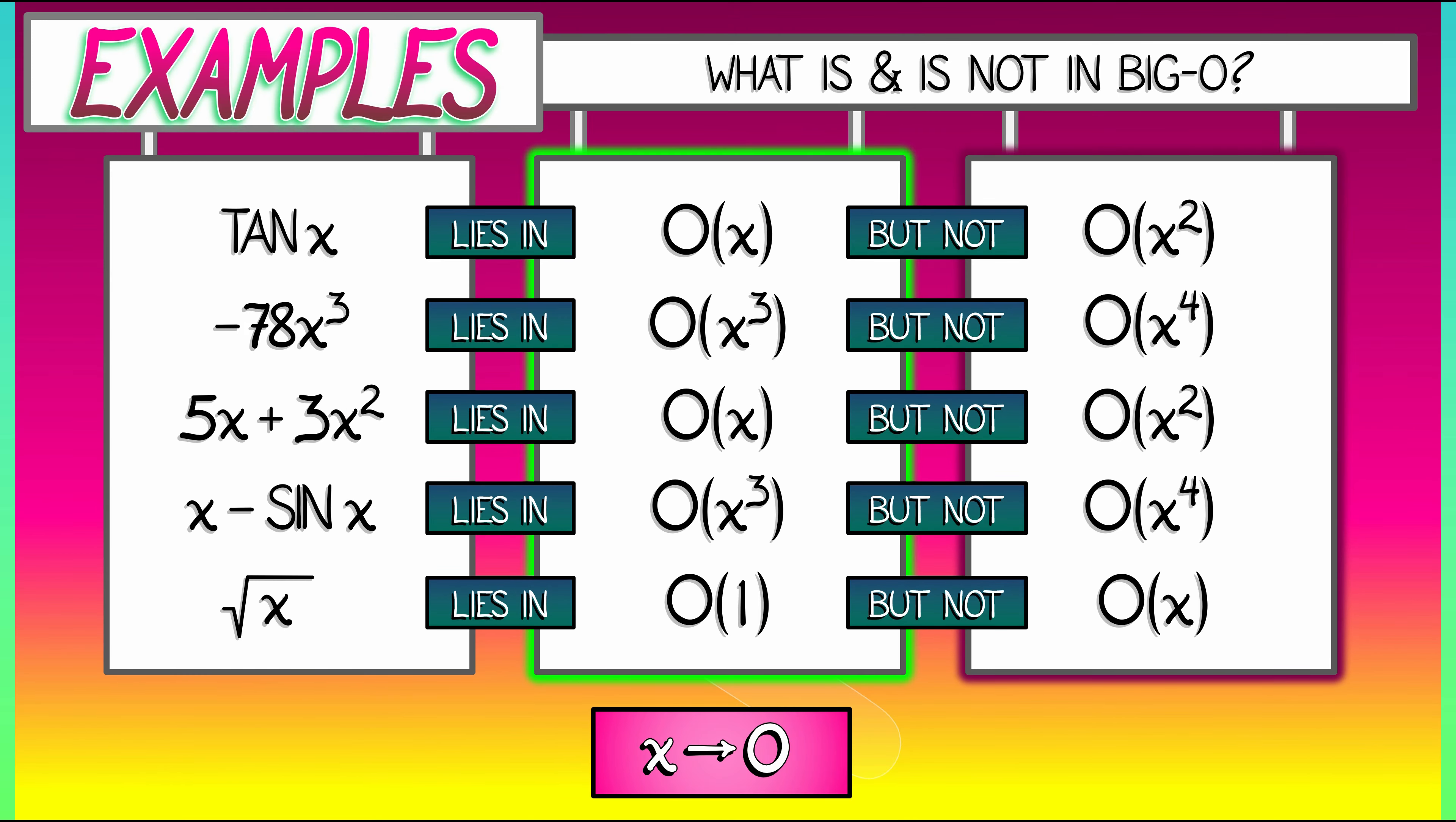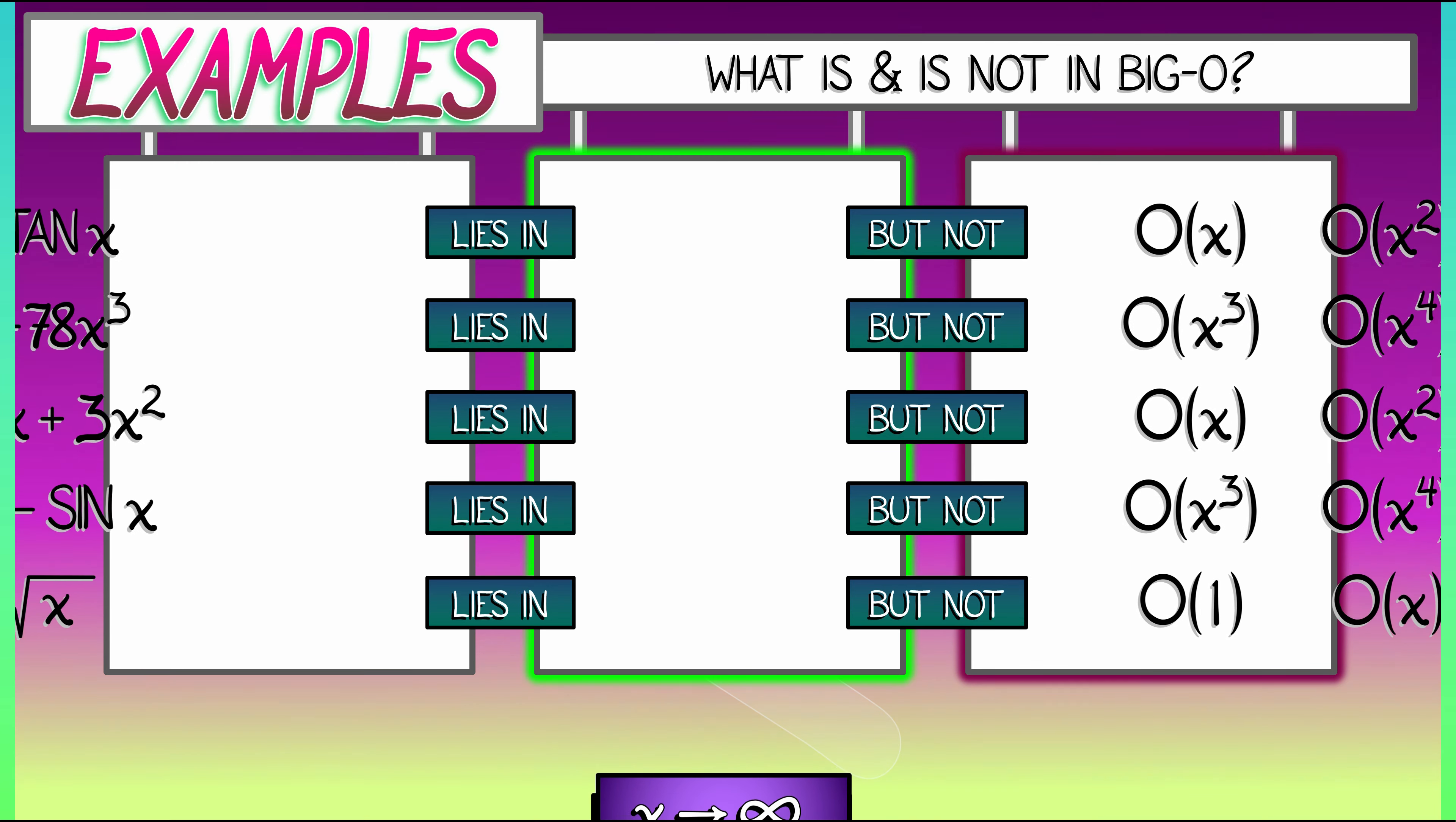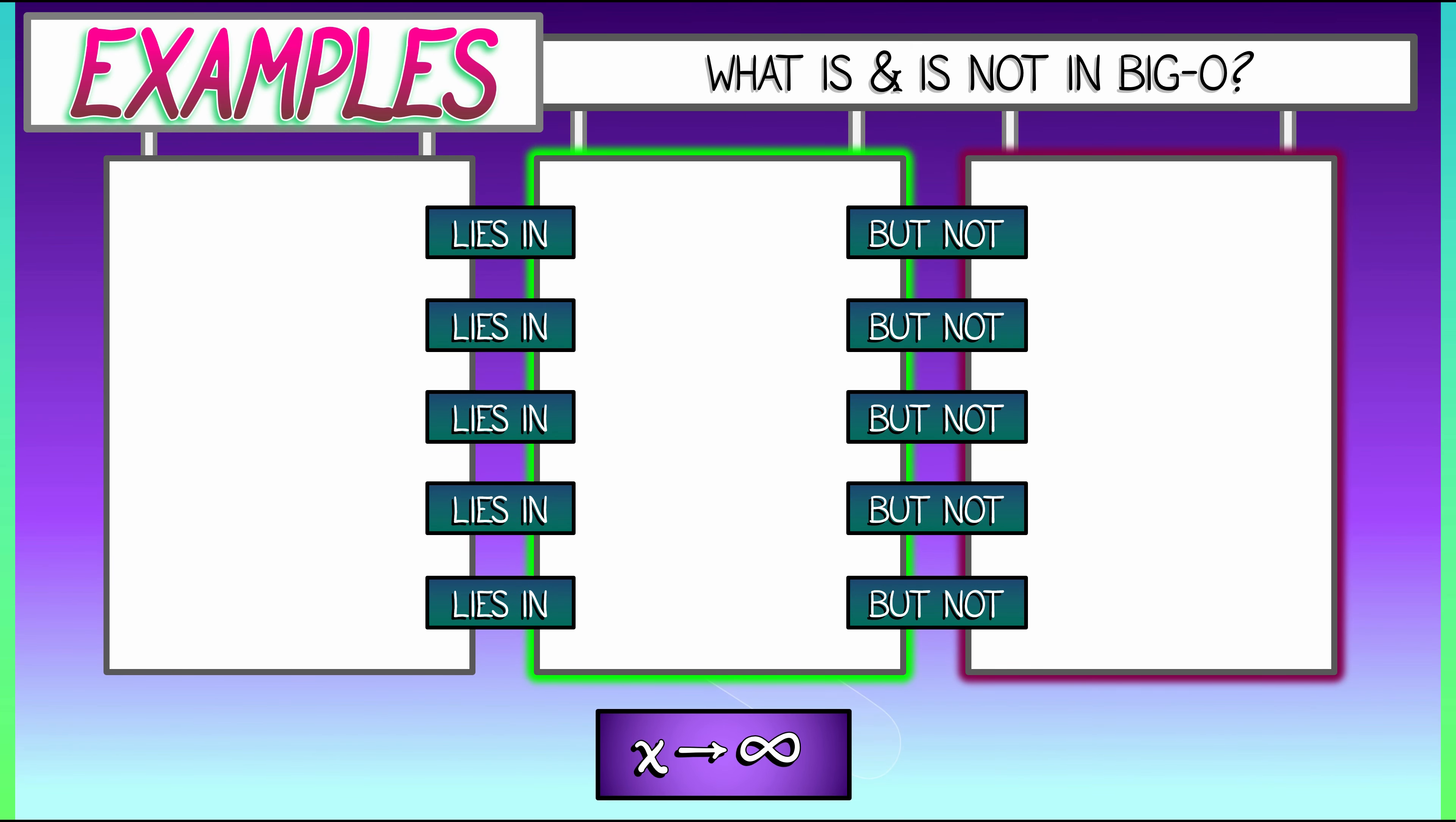Let's change perspective and consider the case where x is going to infinity. How do things change? Well, consider cosine of x. As x goes to infinity, that thing is wiggling. That lies in big O of x to the alpha for any value of alpha bigger than or equal to zero. So the limiting case is big O of x to the zero, or big O of one. Cosine is bounded by a constant.